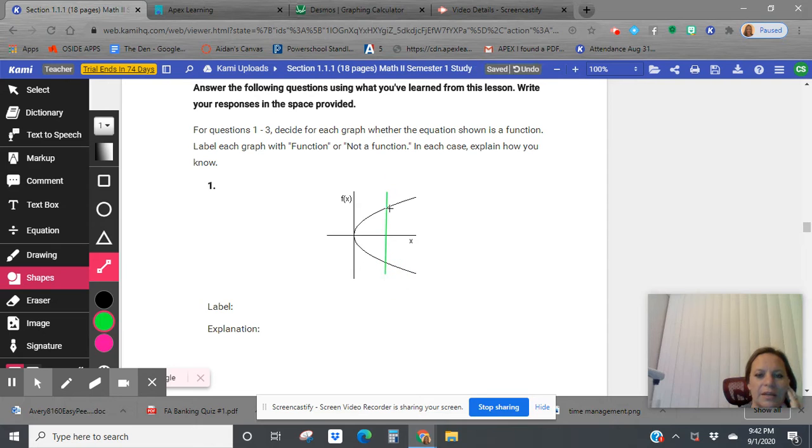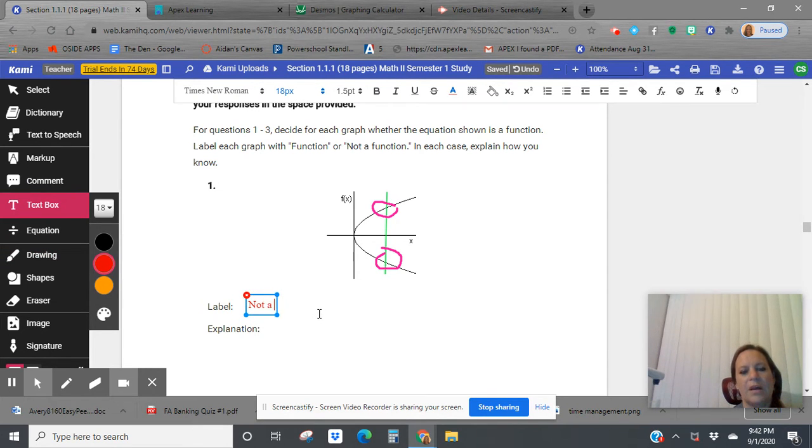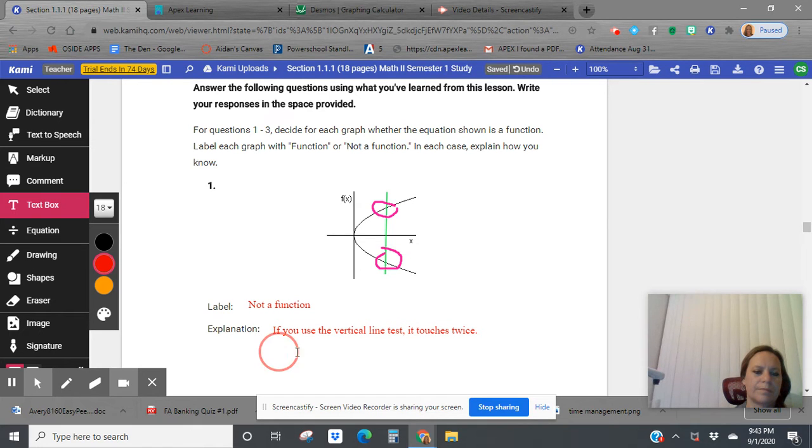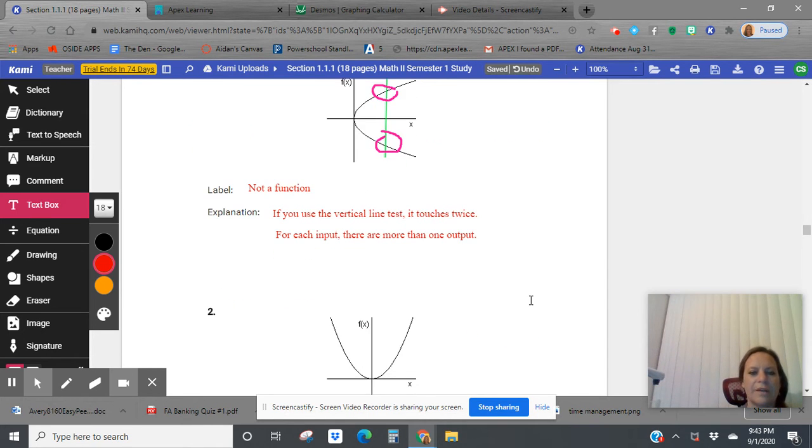If I do the vertical line test, I'm noticing that this is touching in two places. For every one input or one x value, there's two outputs. So I'm going to go right here and say label, this is not a function. If you use the vertical line test, it touches twice. Or for each input, there are more than one output. So it's not a function.